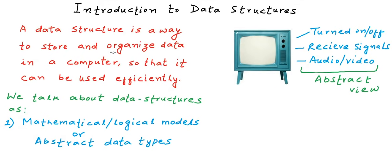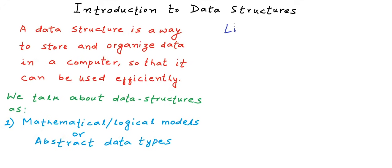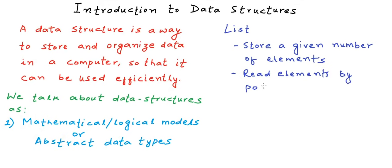An example of abstract data type can be I want to define something called a list that should be able to store a group of elements of a particular data type, and we should be able to read the elements by their position in the list, and we should be able to modify element at a particular position in the list. So we are just defining a model.